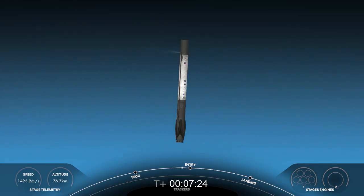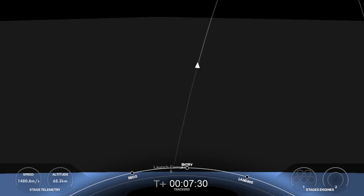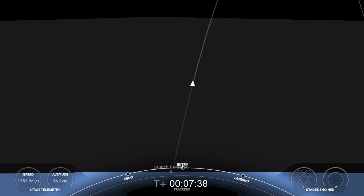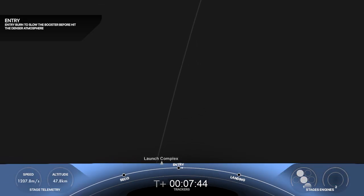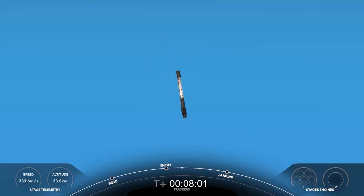Now coming up next, we should be hearing that callout for the entry burn of the Falcon 9 first stage in just about 10 seconds from now. Stage one entry burn startup. There's that confirmation of entry burn startup. If you take a look in the lower left-hand corner of your screen, you can see the engine status. Three of those nine Merlin 1D engines will fire for the entry burn. Stage one entry burn shutdown. That's a short burn. Entry burn has shut down.